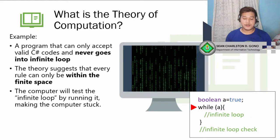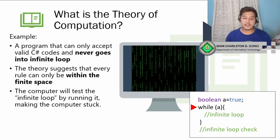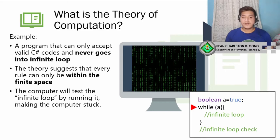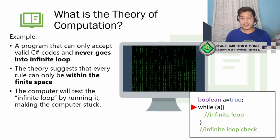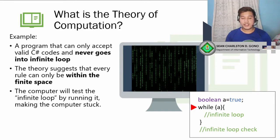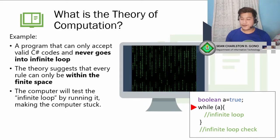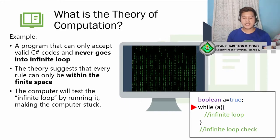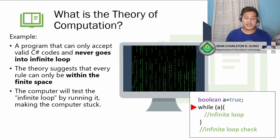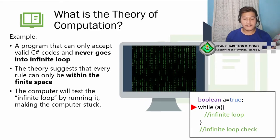What will happen is it will go into an infinite loop, and the only way to break it is to turn off the computer, the IDE, or the machine. Again, the theory of computation only suggests that every rule can only be within a finite space. If it's not within finite space, it will be impossible for the computer. We'll discuss this further later, especially in the final part of the lecture. For now, remember that everything inside the theory of computation must only be in a finite space.